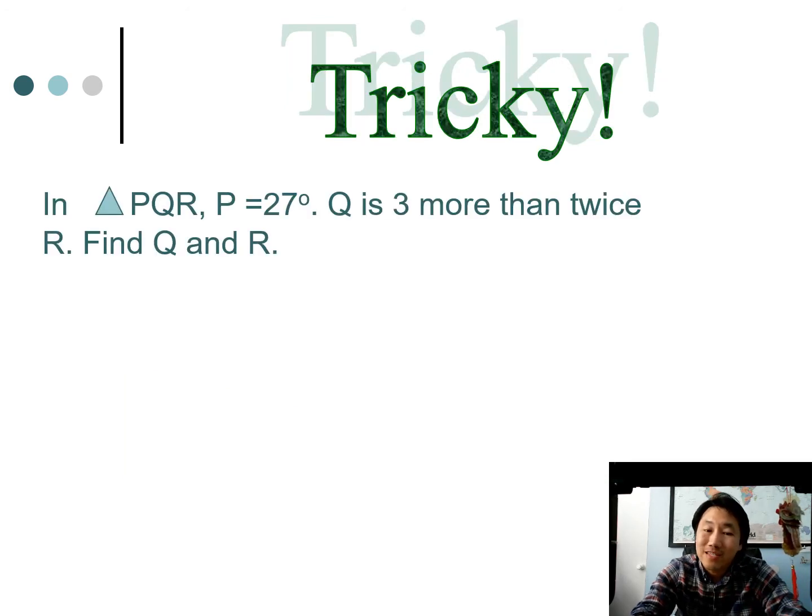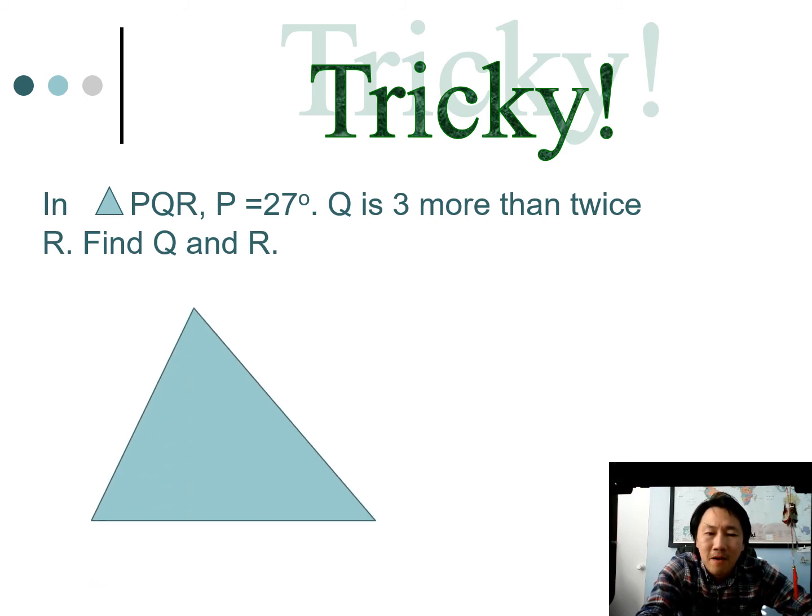This one actually says tricky, and the reason why it's tricky is because no picture is drawn for you. It says in triangle PQR, P is 27 degrees, Q is three more than twice R. You have to find Q and R. All right, so with any of these, it's always a good idea to draw a picture.